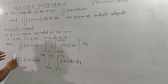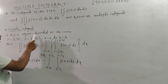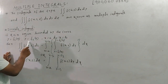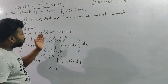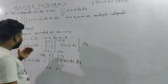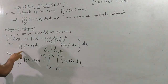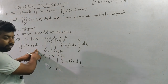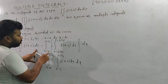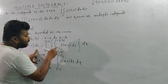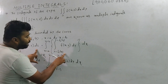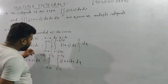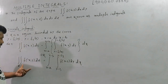If R is a region bounded by the curve y = f₁(x), y = f₂(x), x = a to x = b, then the double integral of f(x,y) dS — where dS means surface — is the integration from x = a to x = b, next integration from y = f₁(x) to y = f₂(x), of f(x,y) dy dx.